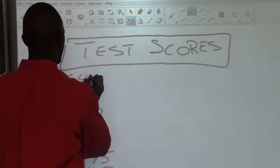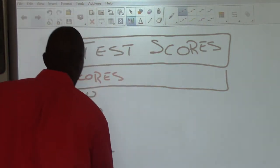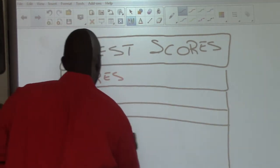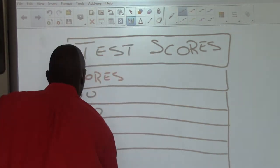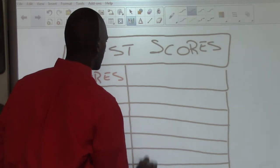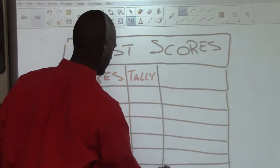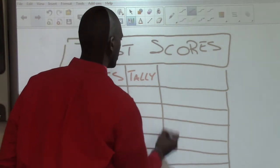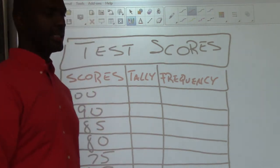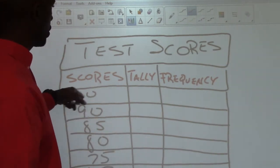We're going to label the first column 'Scores.' We also want to create a column for 'Tally,' which will show our tally marks. Our last column we're going to call 'Frequency.' Frequency is just as it sounds — how often something occurs, how frequent it is, how many times it occurs. So we have: scores, tally, and frequency.